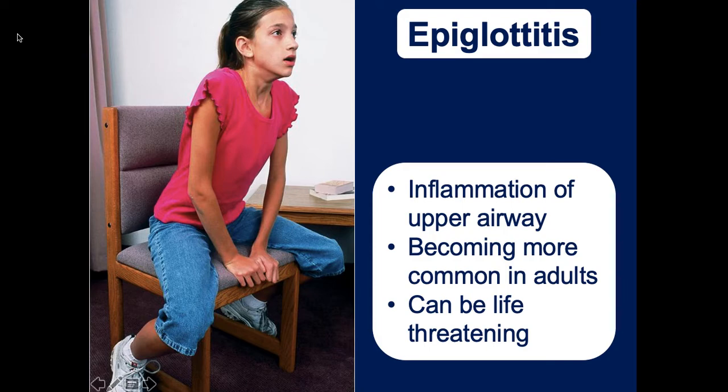Transport the child gently to the closest emergency room immediately. Do not jostle them, do not look inside their mouth, and let them sit in whatever position they choose — they are essentially running the show. Stimulating the epiglottis by sticking fingers in the mouth can trigger a spasm that cuts off the airway. At the hospital, if needed, the physician can perform a surgical airway — a tracheotomy — to provide an alternate airway.